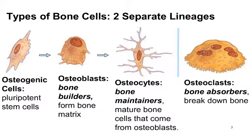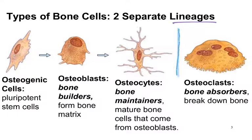To understand how these processes happen, we need to talk a little bit more about the kinds of cells that you find in bone. There are two separate developmental lineages for these cells — think of it as two different populations of stem cells that give rise to these two types of bone cells. I'm going to start with osteoclasts because they're so crazy looking. The blue line here represents the two different lineages, and we're not going to get into the ancestors of the osteoclasts because that's just too much detail for this course.